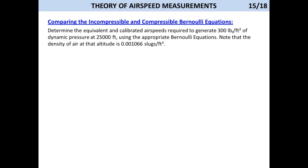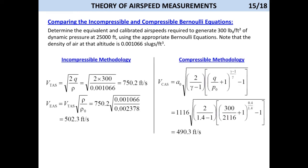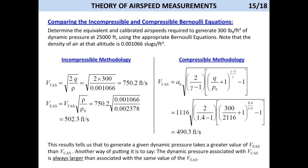Now, let's compare the incompressible and compressible Bernoulli equations. Let's determine the equivalent and calibrated airspeeds required to generate 300 pounds per square foot of dynamic pressure at 25,000 feet using the appropriate Bernoulli equations. Note that the density of air at that altitude is 0.001066 slugs per cubic foot. The solution is shown for each methodology. Remember, you can pause to see the details.